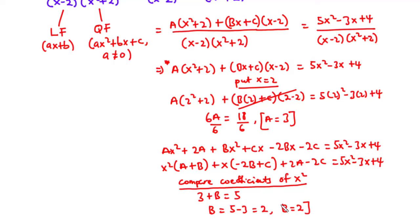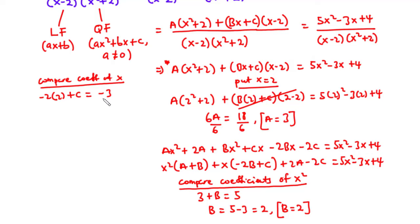Now let's find C by comparing coefficients of x. We have negative 2B plus C equals negative 3. Since B equals 2, we get negative 2 times 2 plus C equals negative 3. Transposing: C equals negative 3 plus 4, so C equals 1. Therefore A equals 3, B equals 2, and C equals 1.